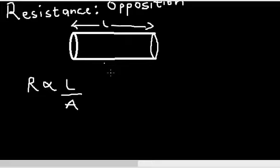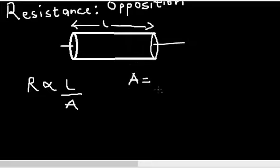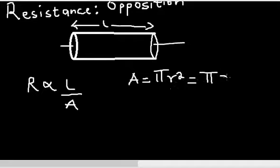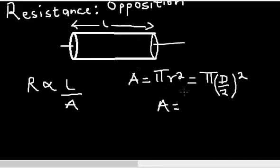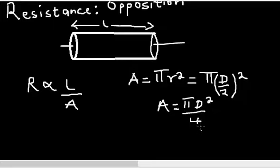The cross-sectional area is the base area of this cylinder. Since the base is a circle, the cross-sectional area of this cylindrical conductor is given as πr². Since radius equals diameter over 2, that becomes π(d/2)², which simplifies to πd²/4.